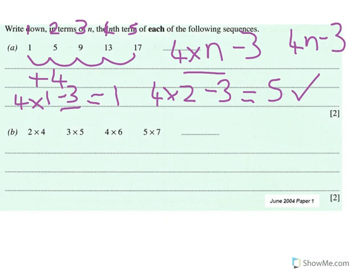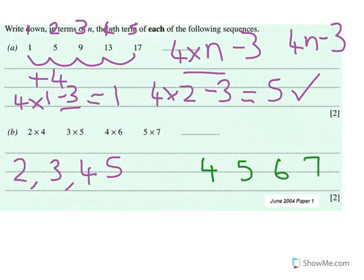This is like the ones we've been doing — we've got two sequences. Looking at the numbers on the left: two, three, four, five. And our other sequence is four, five, six, seven. Two quite simple sequences. Remember, your answer will have a multiply sign in between — don't write the two numbers multiplied together.